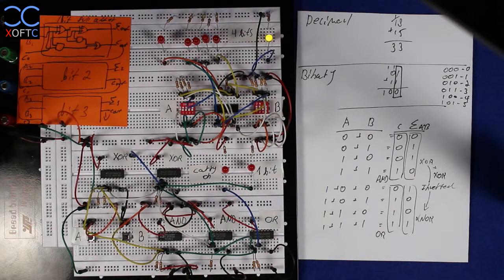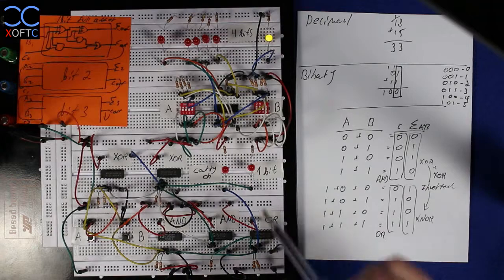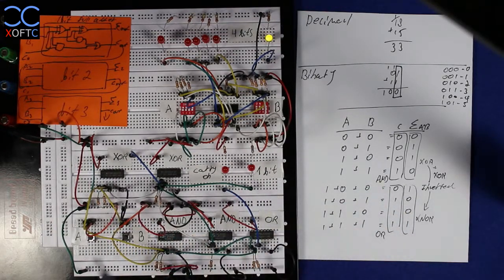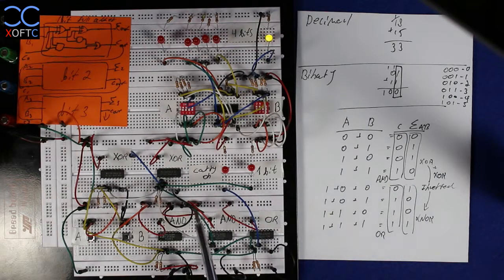First of all, let's look at what we have on the breadboard here. We have two separate circuits. Here we have a single bit full adder. That means that it can add two values, each of a single bit,